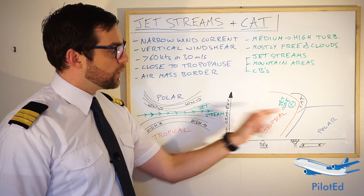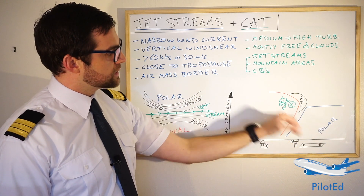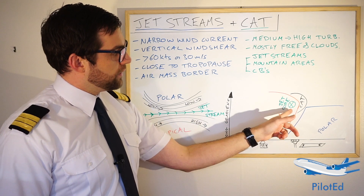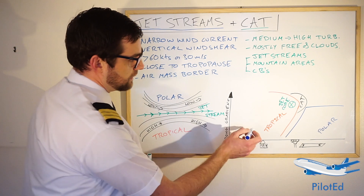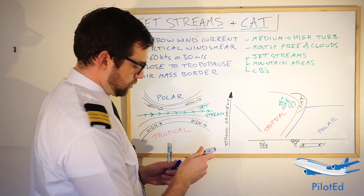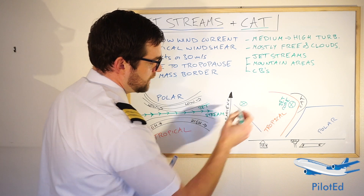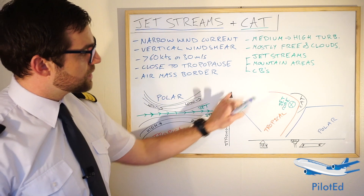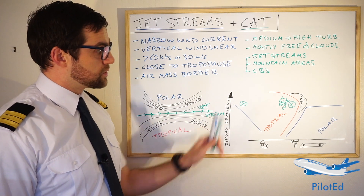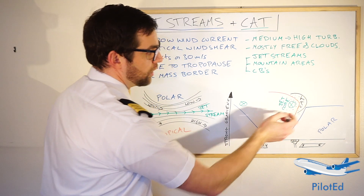The jet core is always on the tropical side. You can see the tropopause would be slightly lower on the polar side and slightly higher on the tropical side, but the jet cores are always on the tropical side. If there were another colder front, we would still get a jet core but it would be on the tropical or warmer air mass side. That's where you're going to find the jet streams — the cores are where the highest winds are. The wind dissipates the further out you go from that jet core.